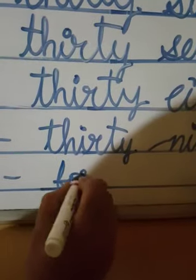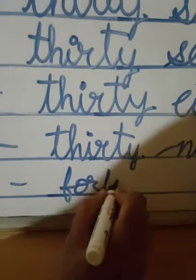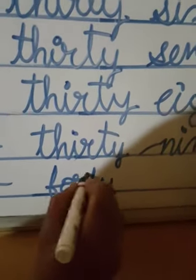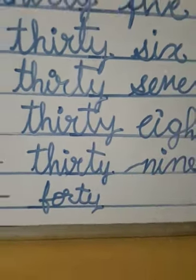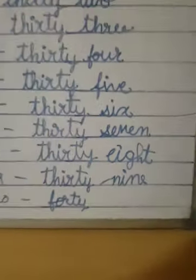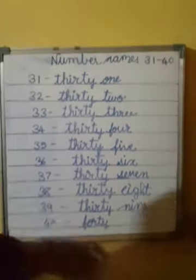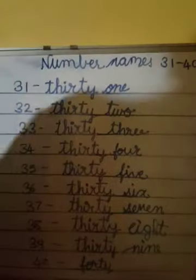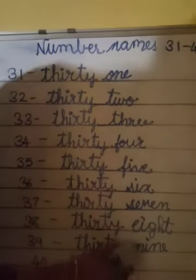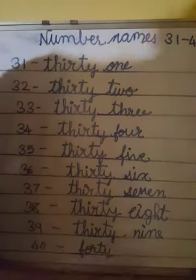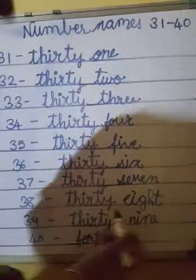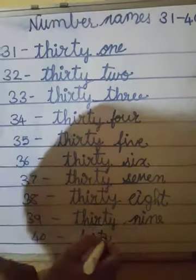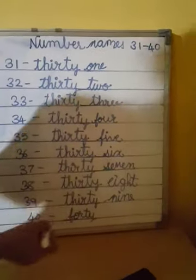40. F-O-R-T-Y. 40. So children, this is the number names of 31 to 40. Now let's read this.